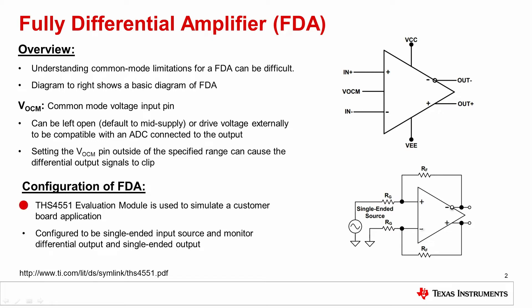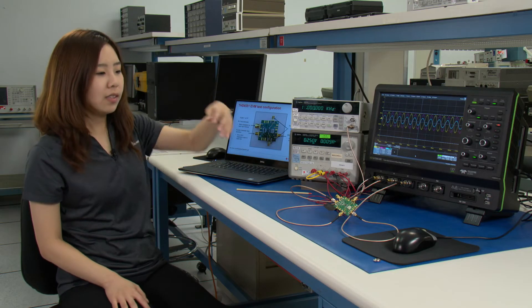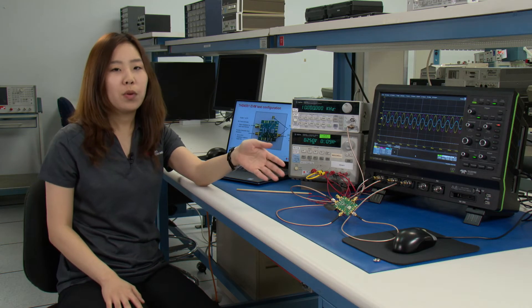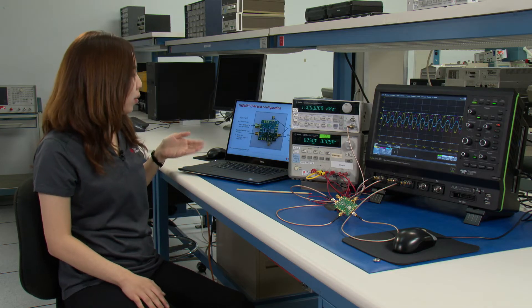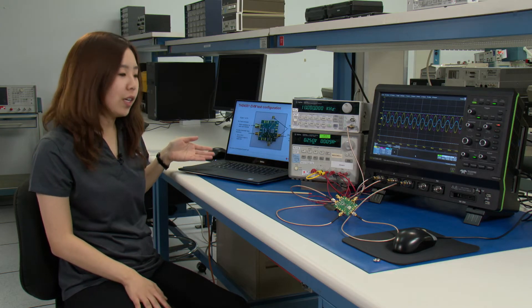For this demonstration, we will be using the THS4551, a high-speed fully differential amplifier, and its respective evaluation module that can be found on TI.com. The purpose of using this module is to simulate a customer board application. This is the board we will be using for our demonstration today, and here on the slides is some more information on the test configuration.